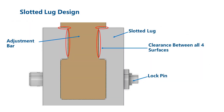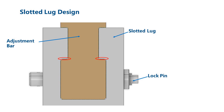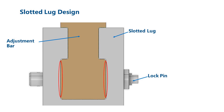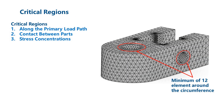Stress concentrations typically occur where the geometry changes significantly, like at holes or corners. Before investigating the critical regions of this part, we need to explain a bit about the design. There is significant clearance between the highlighted surfaces. This causes the load to be transmitted between the two parts through the lock pin and these faces. However, when pulling the trailer, some load may also be transmitted through these surfaces. Side loads are transmitted between these surfaces. The holes in the lug meet all three criteria for critical regions.